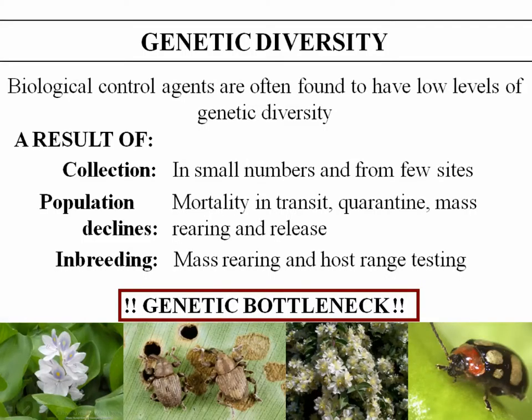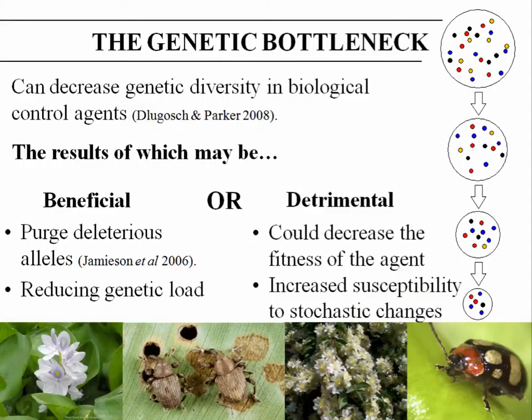Control agents are sometimes found to have quite low levels of genetic diversity, which can be a result of a number of factors: namely at the collection point in the native range where they're often collected in small numbers and from very few sites, also in population declines in mortality and transit, quarantine, mass growing facilities, and inbreeding. We often refer to this as a genetic bottleneck, which will decrease diversity in control agents.